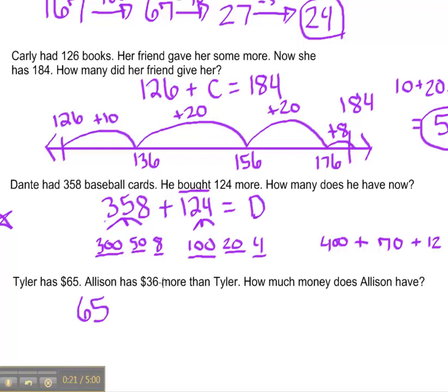Allison has 36 dollars more than Tyler. Alright, so we have 36, and it's more than what Tyler has. So I need to add my 36 to what Tyler has to end up with how much money does Allison have?